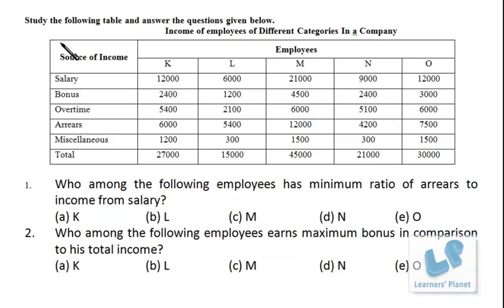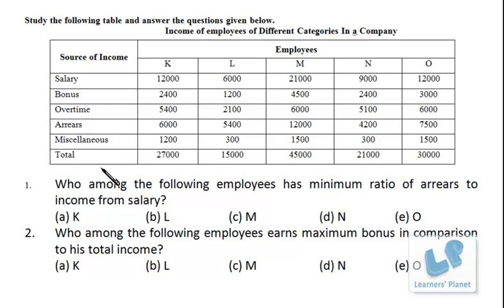Here we are given a table showing the income of employees of different categories in a company. There are various types of employees: K, L, M, N, O. The salary, bonus, overtime, arrears, miscellaneous, and total are given in this table. Now let's take up the questions.